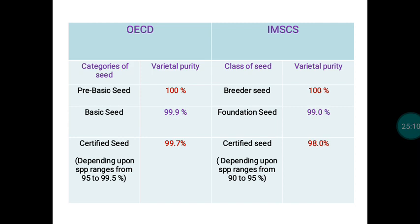Comparing varietal purity standards: in IMSCS, Breeder Seed requires 100% genetic and physical purity, Foundation Seed 99%, and Certified Seed 98%. In OECD schemes, Pre-Basic Seed requires 100%, Basic Seed 99.9%, and Certified Seed 99.7% varietal purity. For hybrids in OECD, varietal purity ranges from 95–99.5% depending on species, whereas in IMSCS, hybrid varietal purity ranges from 92–95%.